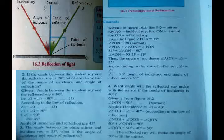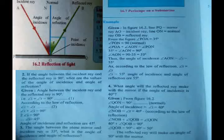According to the law of reflection, angle of incidence equals angle of reflection. Since angle of incidence is 55 degrees, angle of reflection is also 55 degrees. Both the angle of incidence and angle of reflection are 55 degrees, as they are always equal according to the law of reflection.